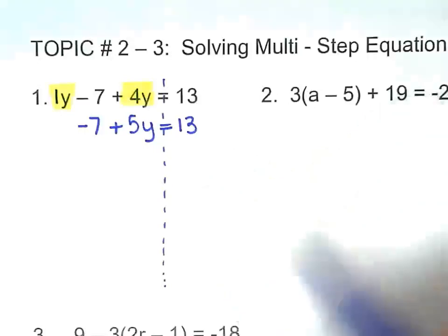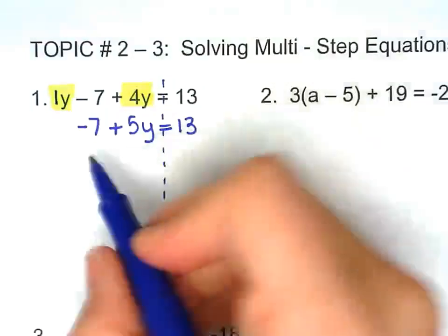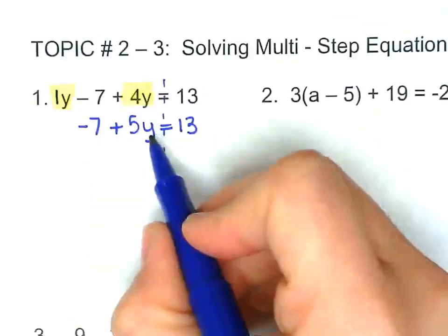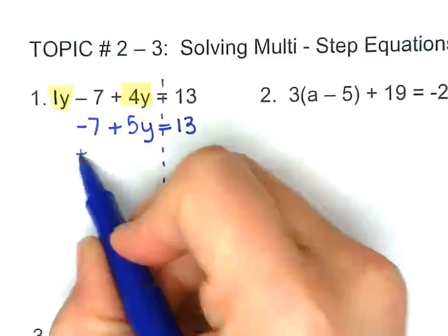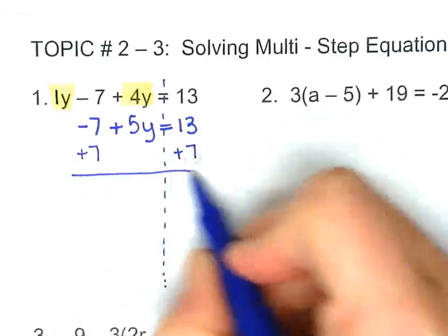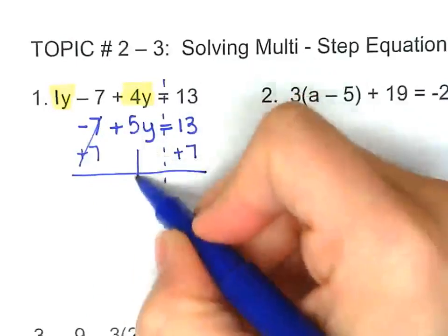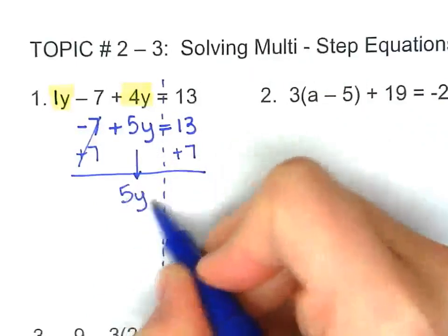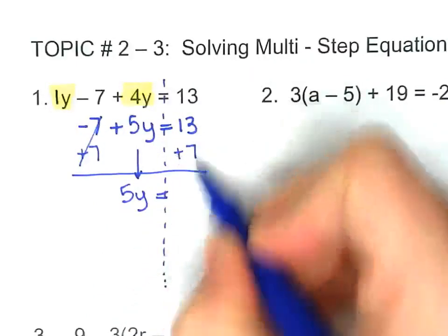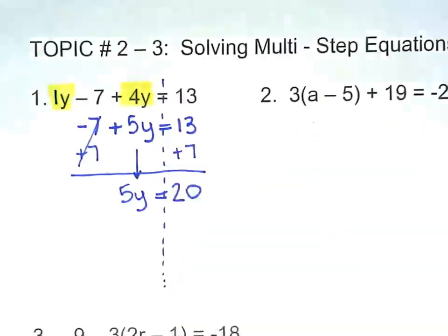And then we're going to start solving like a two-step equation. So the goal is to have y by itself, so I need to add 7 to both sides. Add 7, bring 5y down, 13 plus 7, 20 right there.